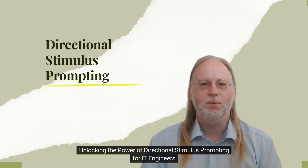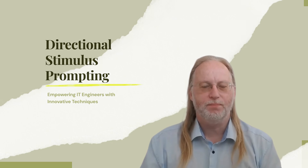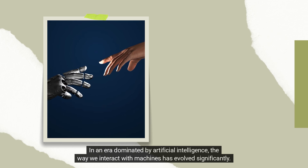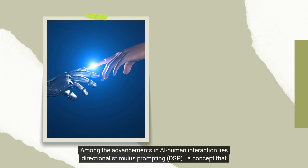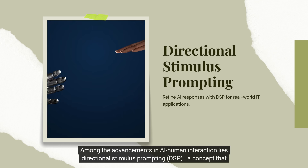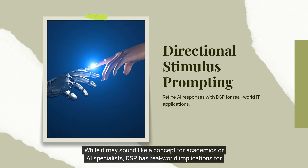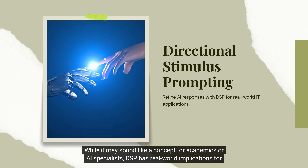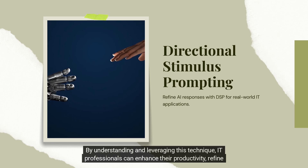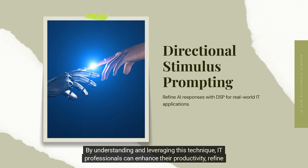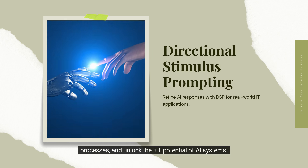Unlocking the power of Directional Stimulus Prompting for IT engineers. In an era dominated by artificial intelligence, the way we interact with machines has evolved significantly. Among the advancements in human-AI interaction lies Directional Stimulus Prompting — DSP — a concept that has gained attention for its ability to refine and optimize AI responses. While it may sound academic, DSP has real-world implications for IT engineers, helping them enhance productivity, refine processes, and unlock the full potential of AI systems.